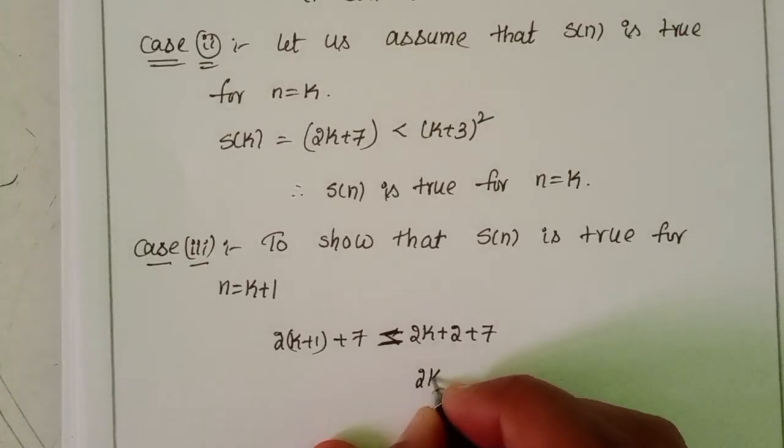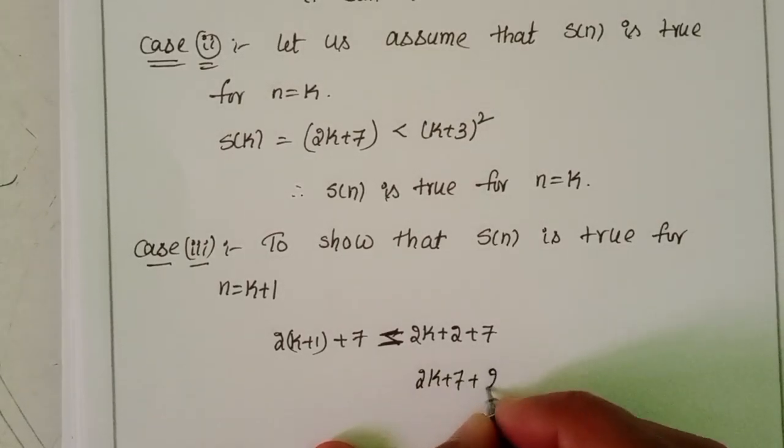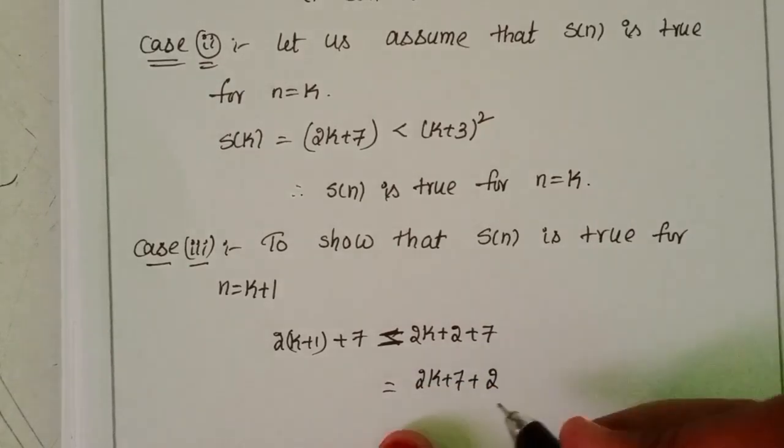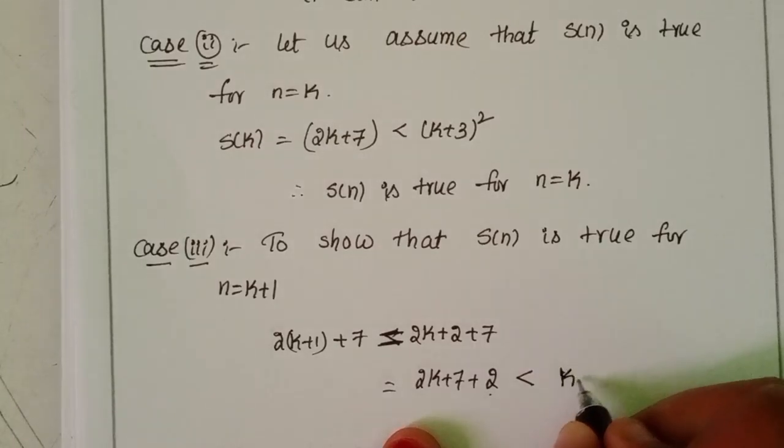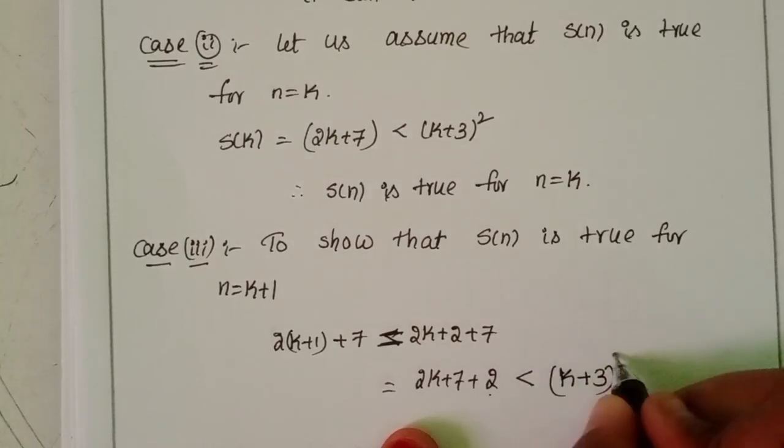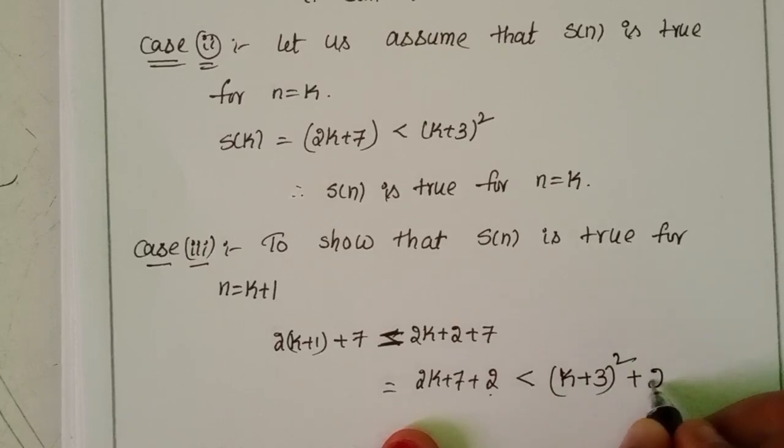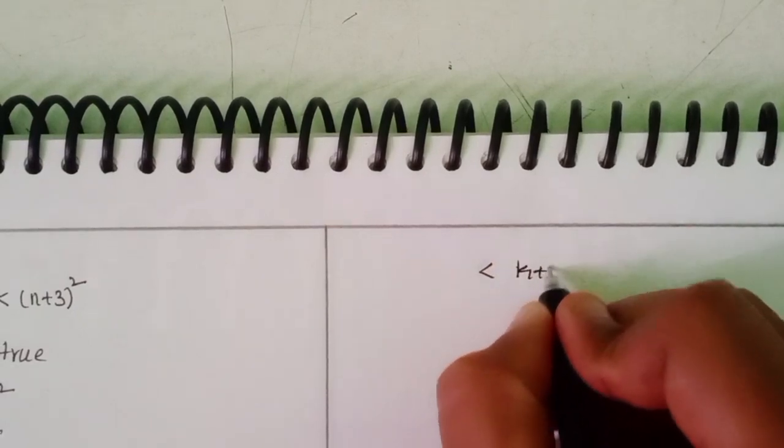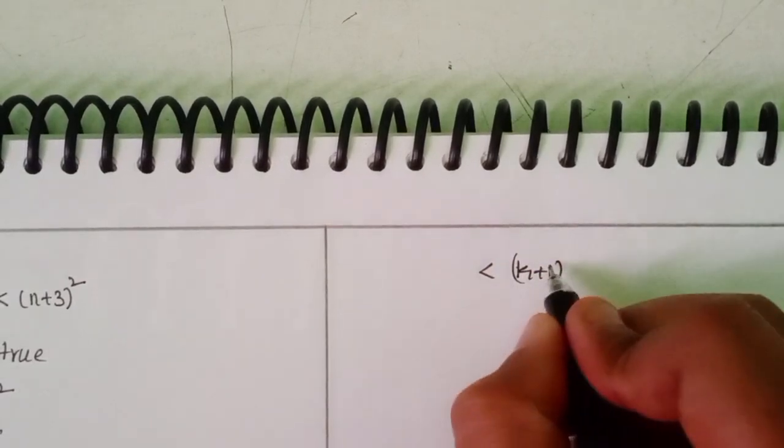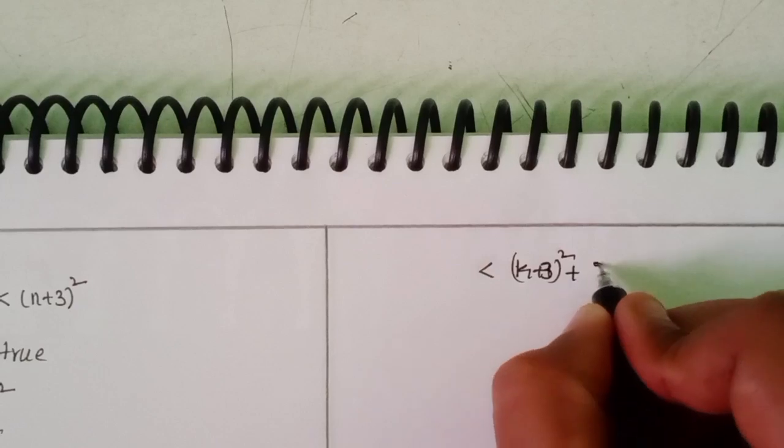Okay, so this one you can write k plus 3 whole square. Here extra 2 is less than equal to k plus 2. That means less than k plus 1, sorry, k plus 3 whole square plus 2.